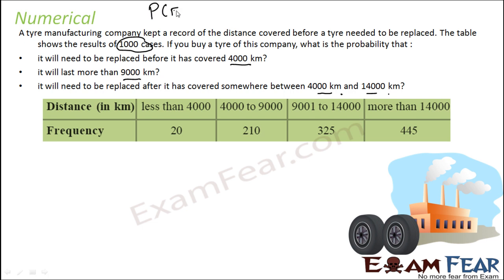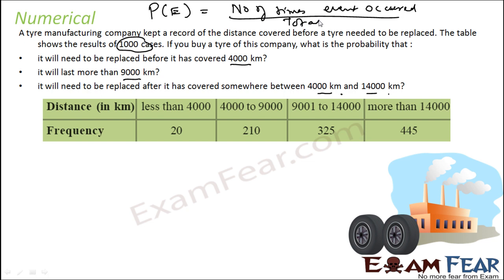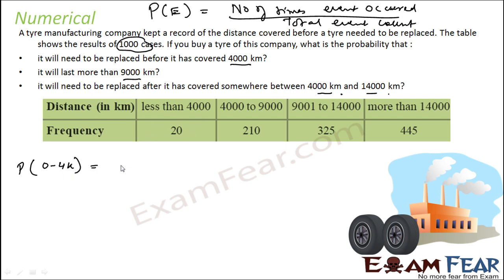We know that probability of any event is nothing but number of times the event occurred by total event count. So because we have to find the probability of replacing a tyre before it covers 4,000 kilometres — that is 0 to 4,000 kilometres — it is nothing but 20 by 1,000. The value is 0.02.